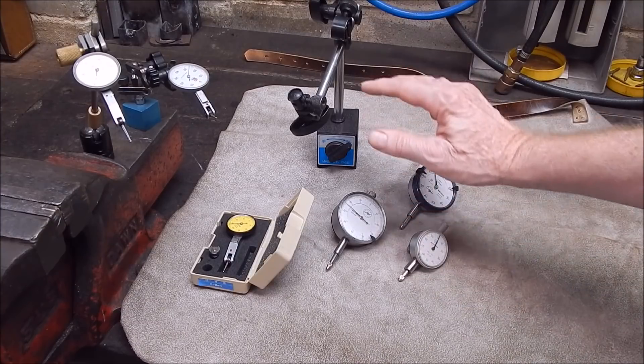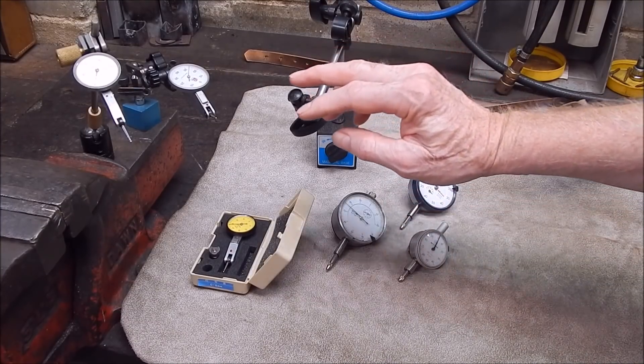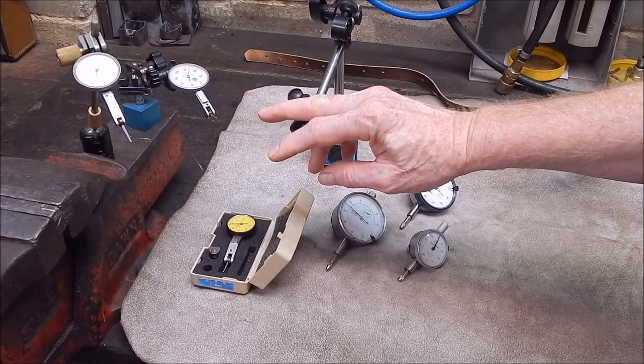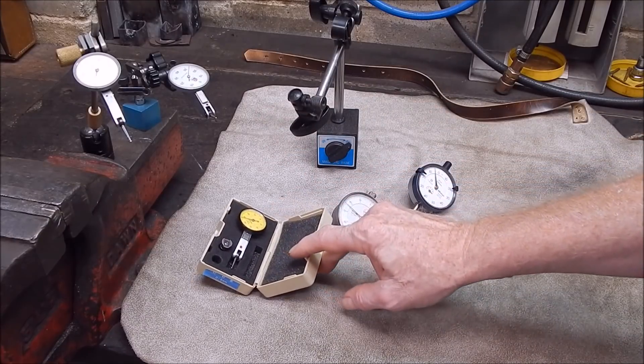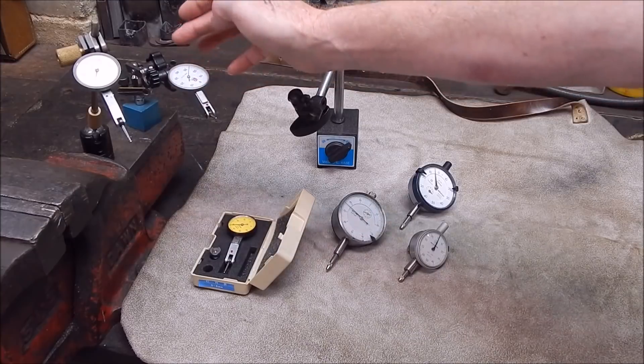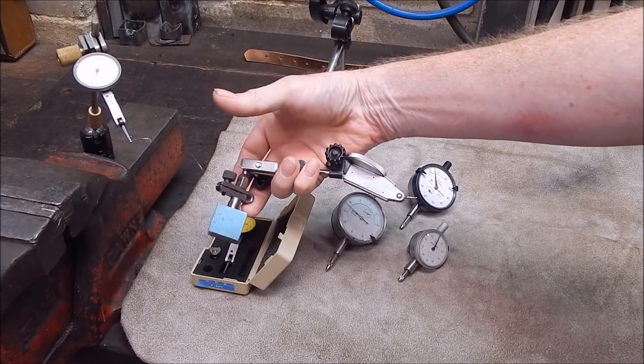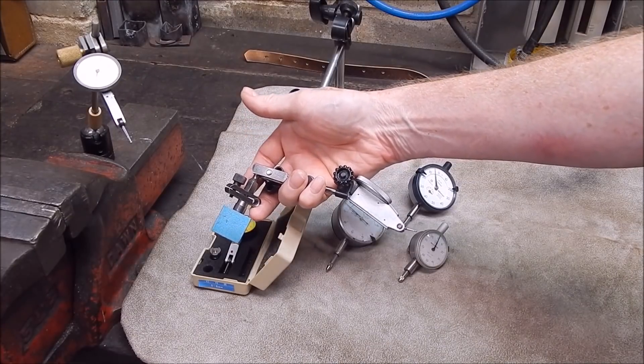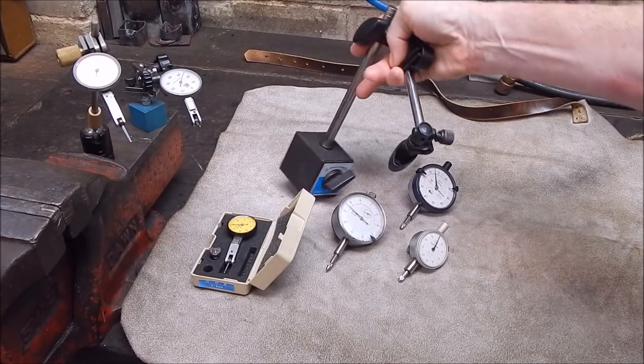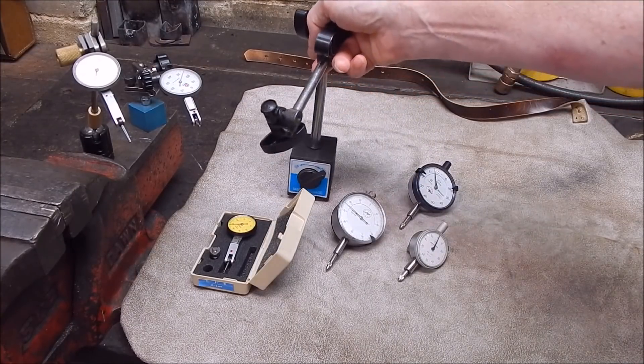Now, as I said, these are okay for certain jobs, but they can't do what a test indicator can do. And over the years I've had three. I started off with this one. It's a cheap Chinese test indicator that came with this stand. These are a really good little stand. Magnetic. Excellent. These stands are big and clunky. And if you've got a small lathe, they're going to be a bloody nuisance, I'll tell you right now.